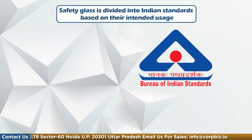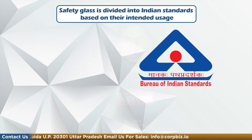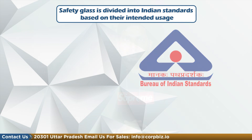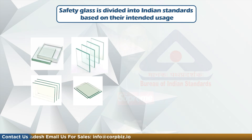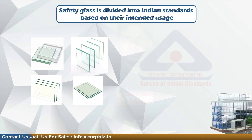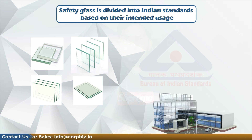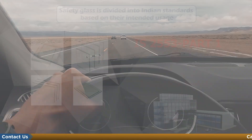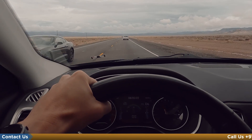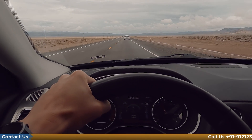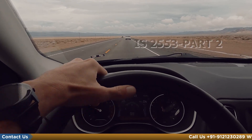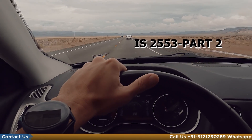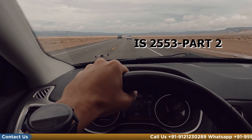Safety glass is divided into Indian standards based on their intended use. Safety glass used in architectural, building and general uses is as per IS2553 Part 1. Safety glass used in the automobile sector is as per IS2553 Part 2.